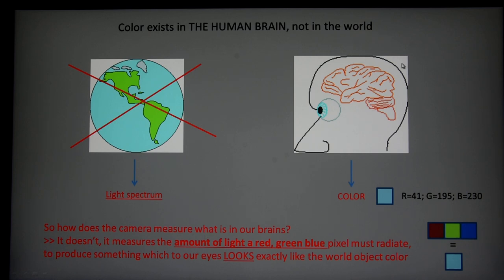So if the color happens in the brain, you can wonder how can a camera know what's happening in your brain. It doesn't need to know, because it only needs to measure the three values to control the intensities of three pixels in your display—a red, a green and a blue pixel—so that it looks like the blue you see in the real world object.